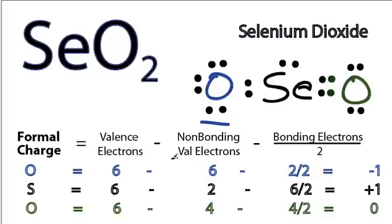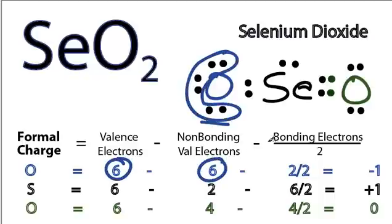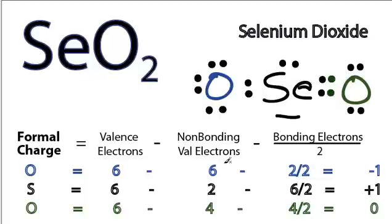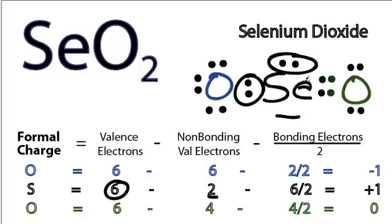So this oxygen right here, 6 valence electrons on the periodic table, 6 that are non-bonding, minus 2 that are bonding. So 6 minus 6 minus 1 is minus 1. For the Se, we have 6 valence electrons, we have 2 that are non-bonding, and then we have 2 plus 4 that are bonding, 6. So 6 minus 2 minus 3 is a positive 1.